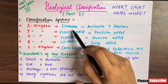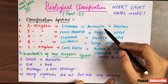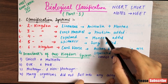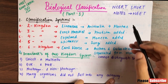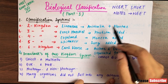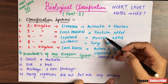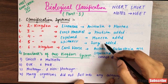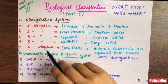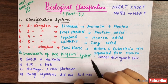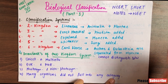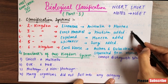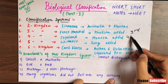The 2-kingdom system was given by Linnaeus — the two kingdoms were Plantae and Animalia. The 3-kingdom system was given by Ernst Haeckel, who added Protista as the third kingdom. The 4-kingdom classification was given by Copeland, who added Monera as the fourth kingdom.